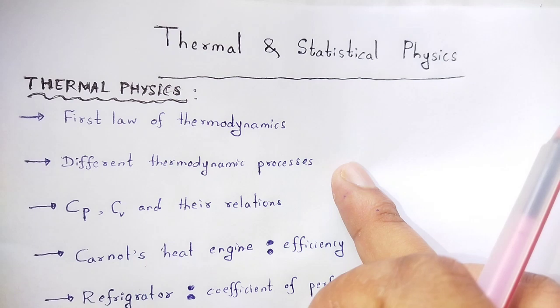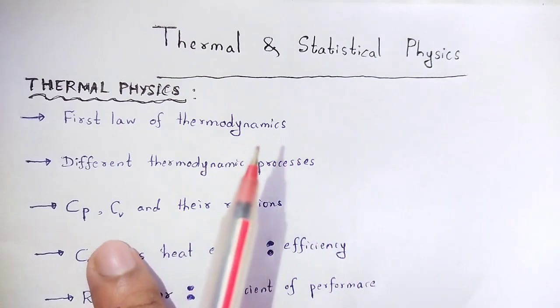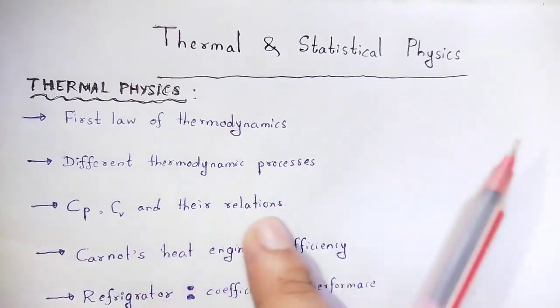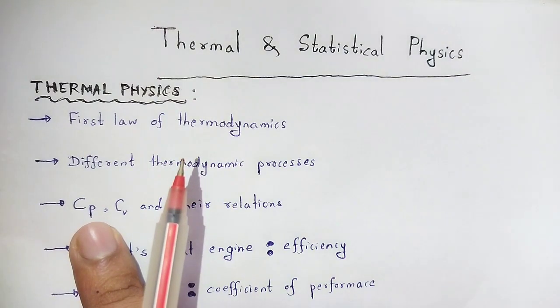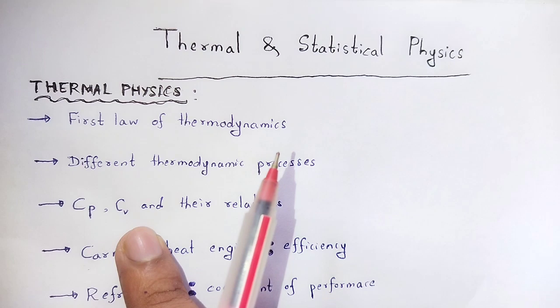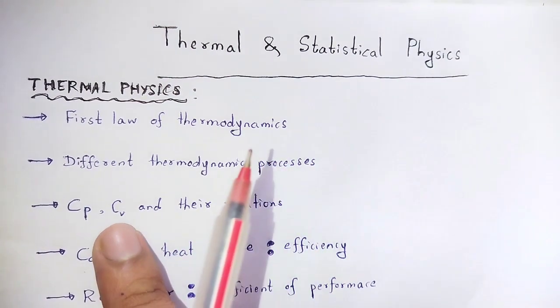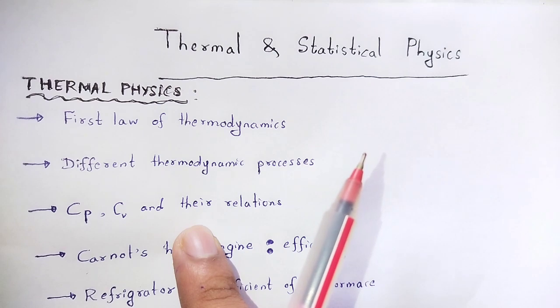Cp, Cv and their relations. Specific heat at constant pressure CP, specific heat at constant volume CV, and the relations between them - Mayer's relations. CP divided by CV is equal to the constant gamma.